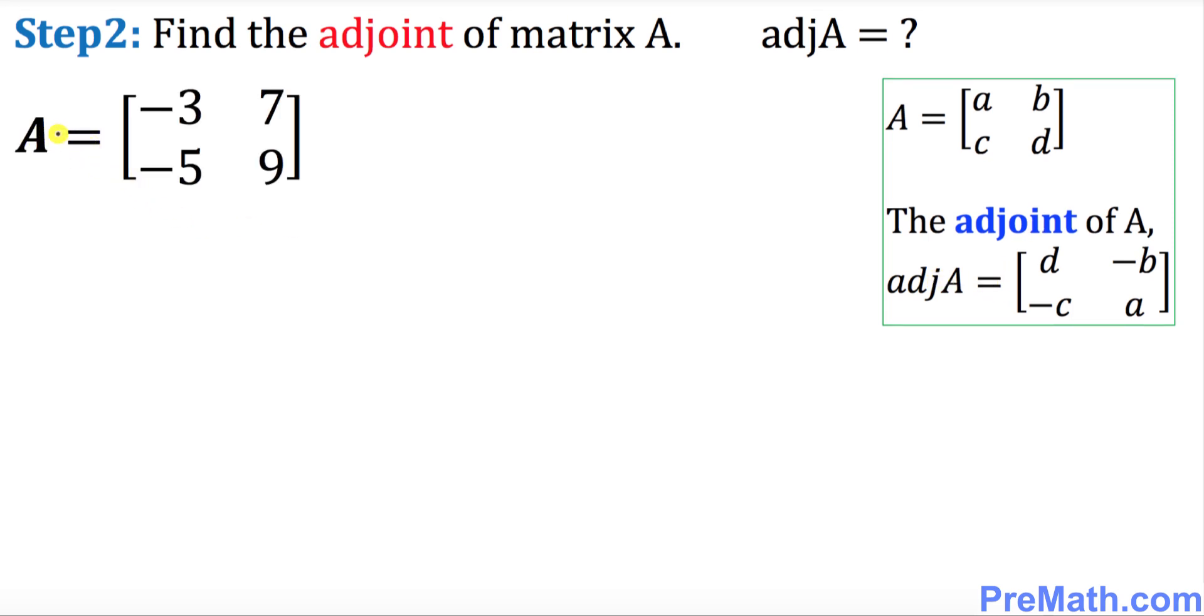So we're going to find the adjoint matrix of this given A matrix. We're going to look for adj A. I want you to look at this diagonal over here, these numbers. What you need to do is simply switch these numbers—that means negative three shows up right here and nine shows up over there. You are swapping them, so nine comes over here and negative three is here.